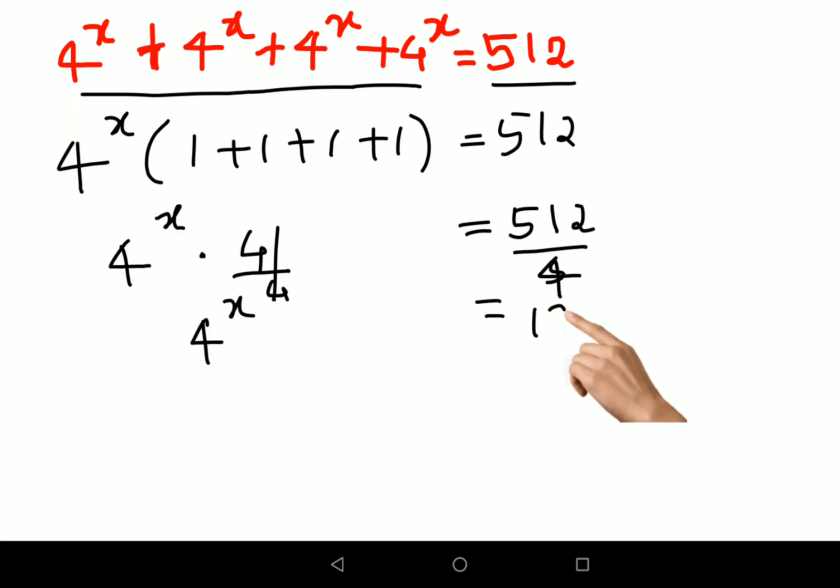Now understand this can be written as 2^(2x), and this is nothing but 2^7.